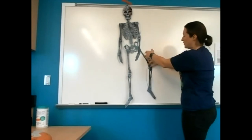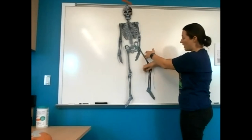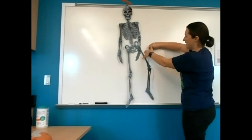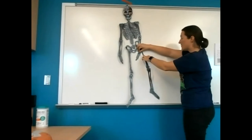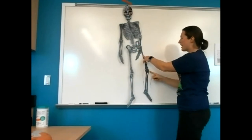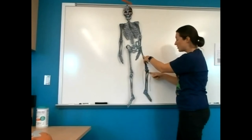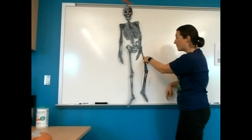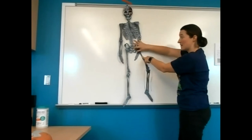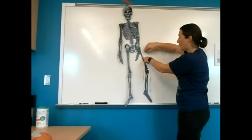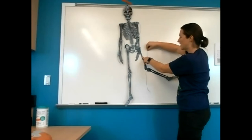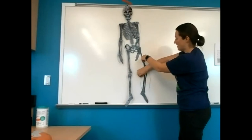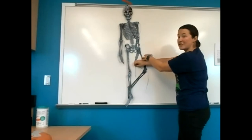Now, if we pull on the other insertion — pulling insertion towards origin — we see exactly the opposite movement. These are antagonistic actions. The insertions are on opposite sides of the joint. The movable point is farther away from the body. When the sarcomere shortens, the insertion is pulled towards the origin, producing either extension or flexion at the knee.